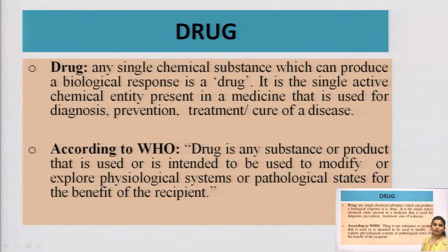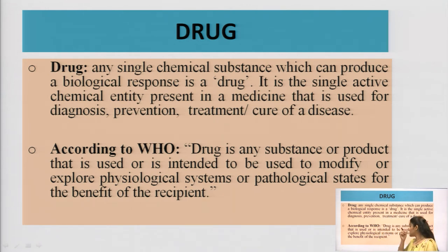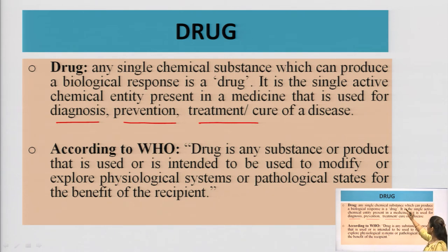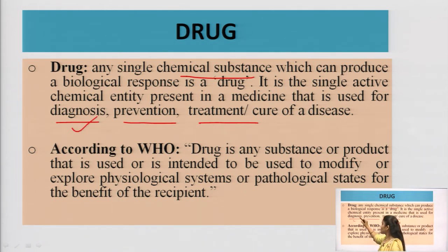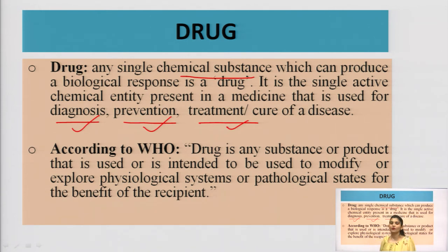We have been using the term 'drug,' so we need to know what a drug is. A drug is any single chemical substance which can produce a biological response. It is a single active chemical entity present in a medicine that is used for diagnosis, prevention, treatment, and cure of disease. Diagnosis means when you go to a lab, get a test done — for example an X-ray — so the doctor can diagnose a particular problem in a body system. We also use drugs in diagnosis sometimes.